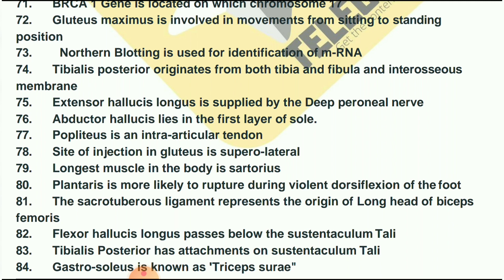Tibialis posterior originates from both tibia and fibula and the interosseous membrane. Extensor hallucis longus is supplied by the deep peroneal nerve. Abductor hallucis lies in the first layer of the sole. Popliteus is an intra-articular tendon. The site of injection in the gluteus is the superior lateral quadrant.